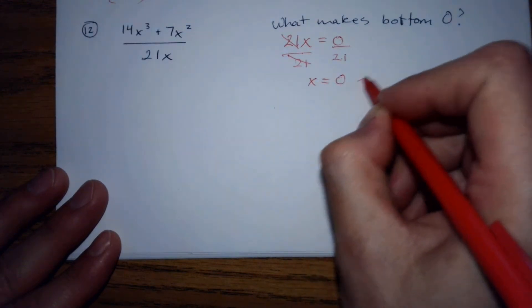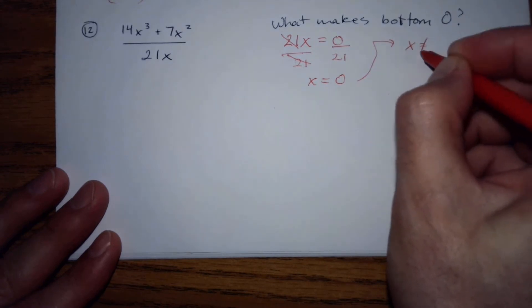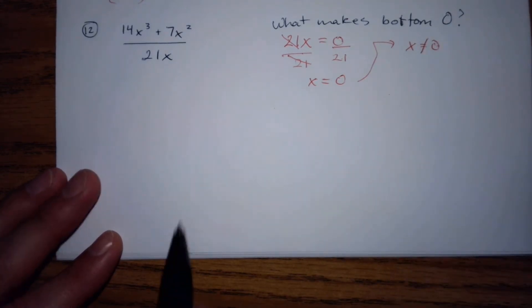So x equals zero, which means we don't want the bottom to equal zero, so we're not allowed to plug in zero. We'll include that at the very end as a restriction.